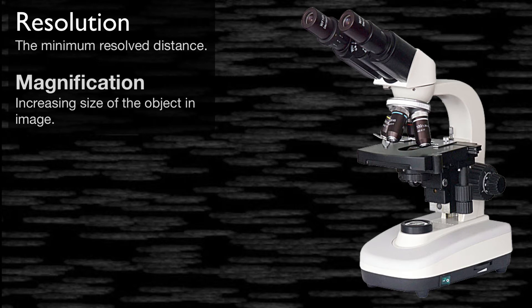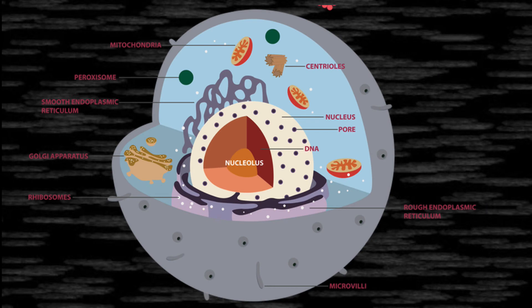We have two types of cells: prokaryotes and eukaryotes. Eukaryotes are organisms having a true nucleus — a true nucleus means there is a membrane-bounded structure inside the cell. Eukaryotes contain chromosomes and a variety of membrane-bounded organelles like mitochondria, Golgi apparatus, lysosomes, and plastids.